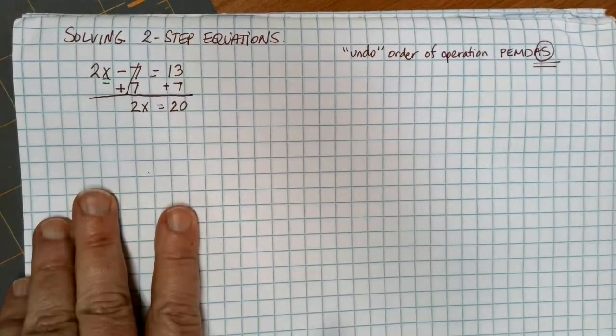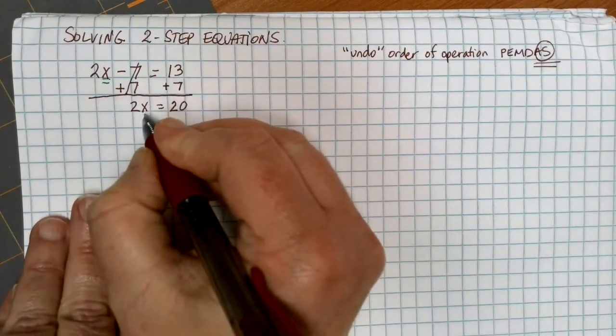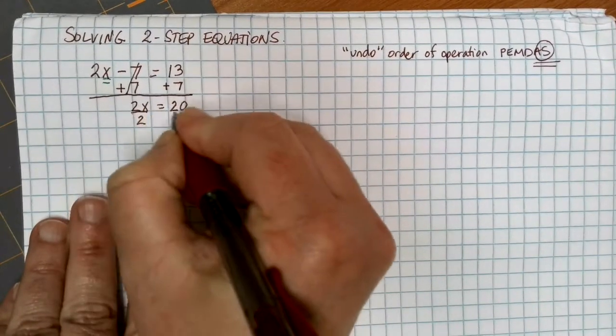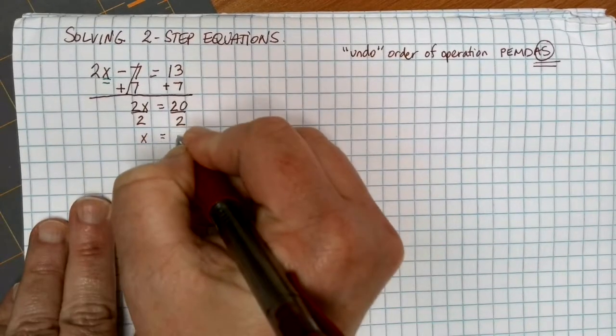To finish getting the x by itself, I'm going to need to get rid of the multiplied by 2, and I can do the opposite operation here, which is dividing by 2, and that gives me x equals 10.